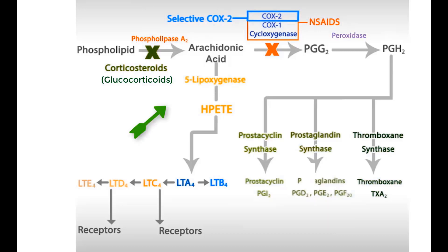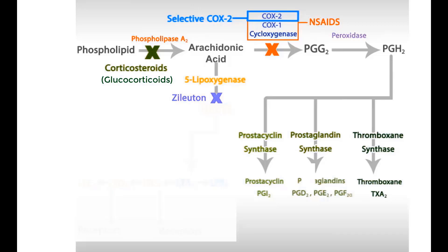Going to leukotriene pathways, you will notice that the drug zileuton interferes with the 5-lipoxygenase enzyme, thus inhibiting the production of all inflammatory leukotrienes.